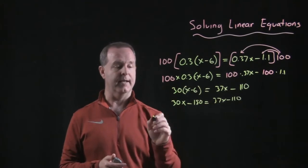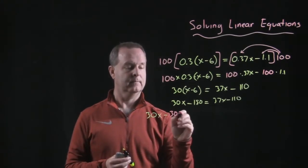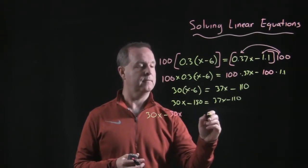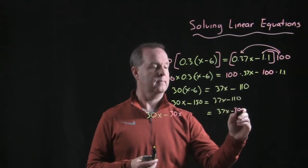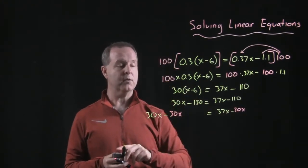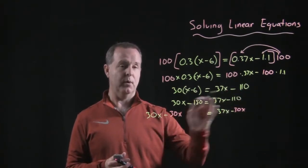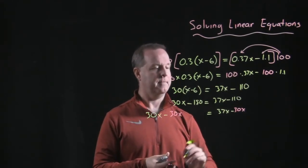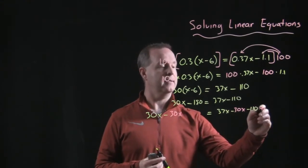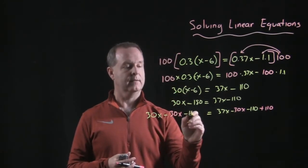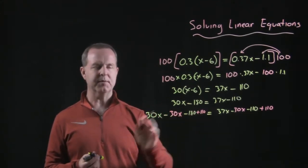I know I'm going to subtract 30x from this side, so 30x take away 30x. And I'm going to do that on the other side too, so I have 37x take away 30x. I'm also going to add, since I want my constants on this side, I'm also going to add 110 to both sides. So if I have my minus 110 there, let's add 110, and I need to add 110 to the other side. So really I'm doing both steps at the same time.